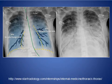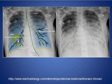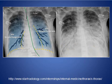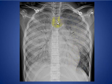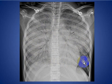Here we see bilateral air bronchogram involving both mid and lower zones of both lungs. This sketch shows the linear lucent branching areas representing air bronchogram in a patient with bilateral pneumonia. Here is another patient with bilateral air bronchogram associated with bilateral alveolar opacification of both lungs in a patient with adult respiratory distress syndrome.